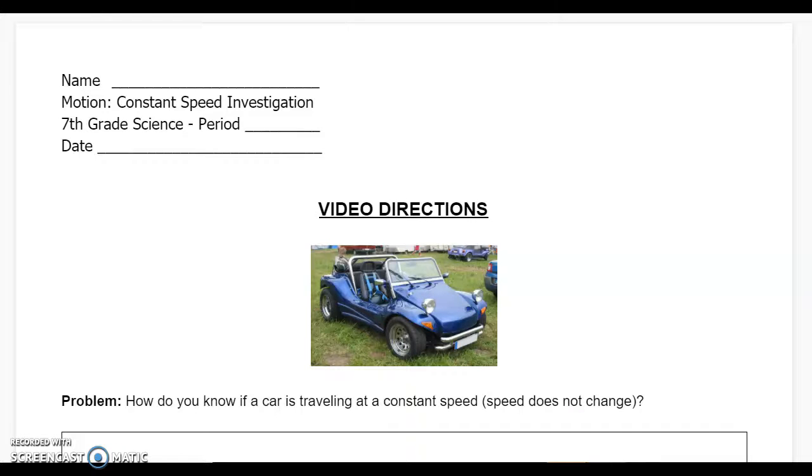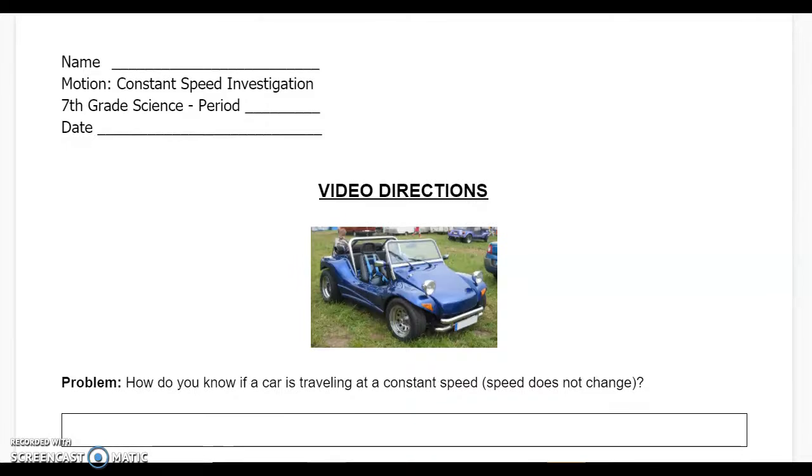This video is a quick introduction on how to fill out the motion constant speed investigation document. The first thing you will do is answer the problem question: how do you know if a car is traveling at a constant speed where the speed does not change? You don't need to look anything up for this question, you're just using prior knowledge and trying your best.